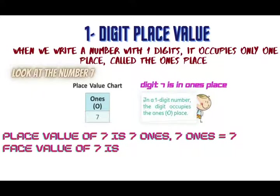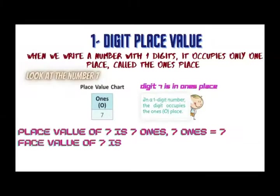When we write a number with one digit, it occupies only one place, called the ones place. In the place value chart, I will take example of one-digit number as 7. So you can see in the place value chart, 7 is placed on ones position. Place value of 7 is 7 ones, 7 ones equals 7. Face value of 7 is 7.